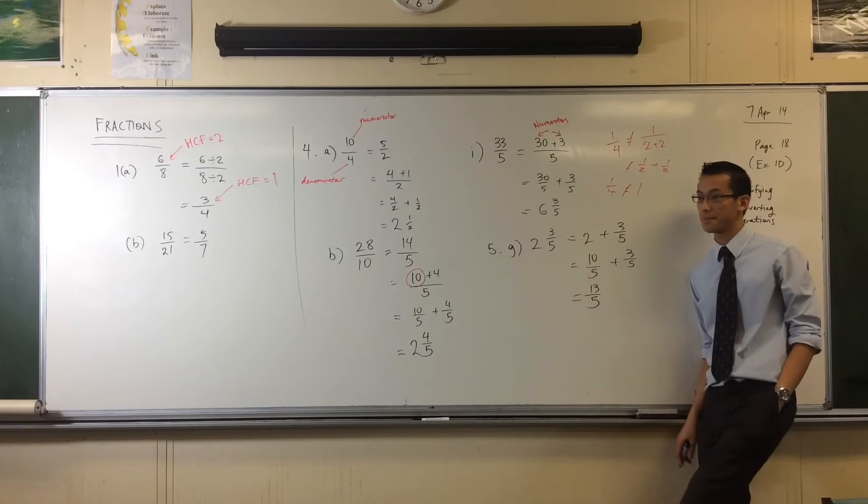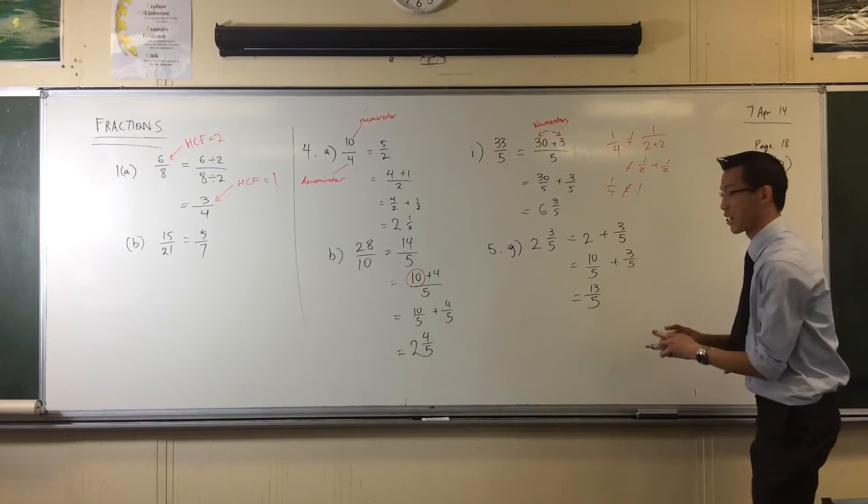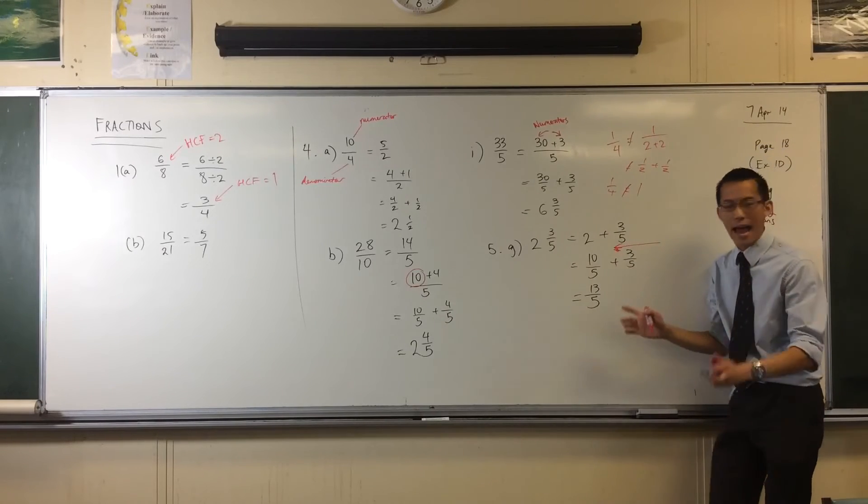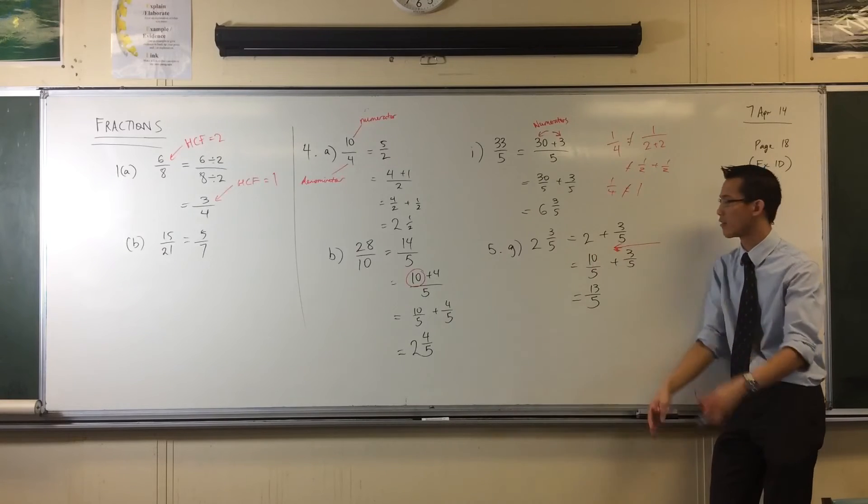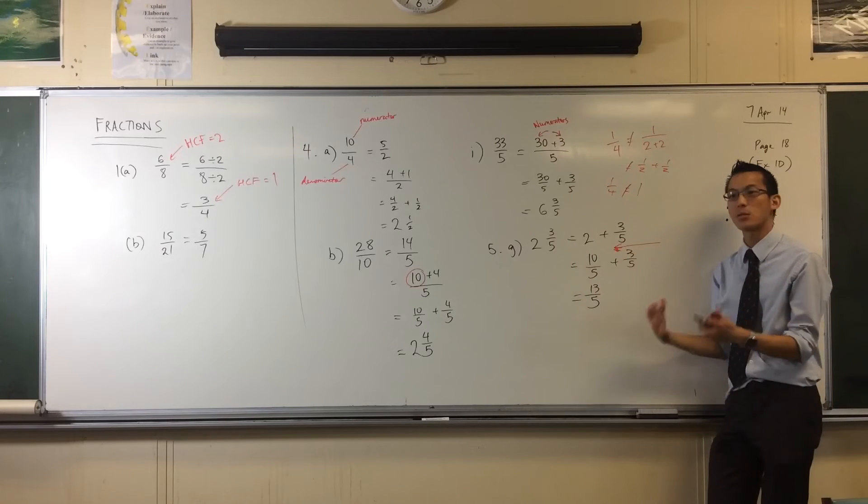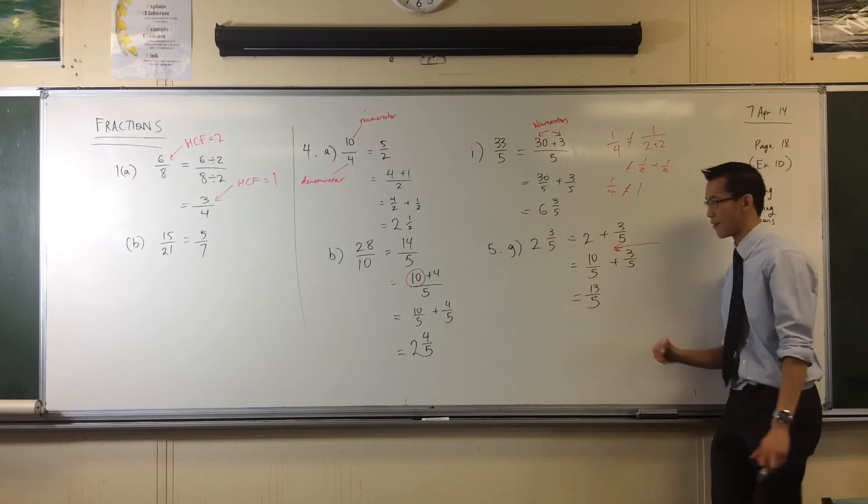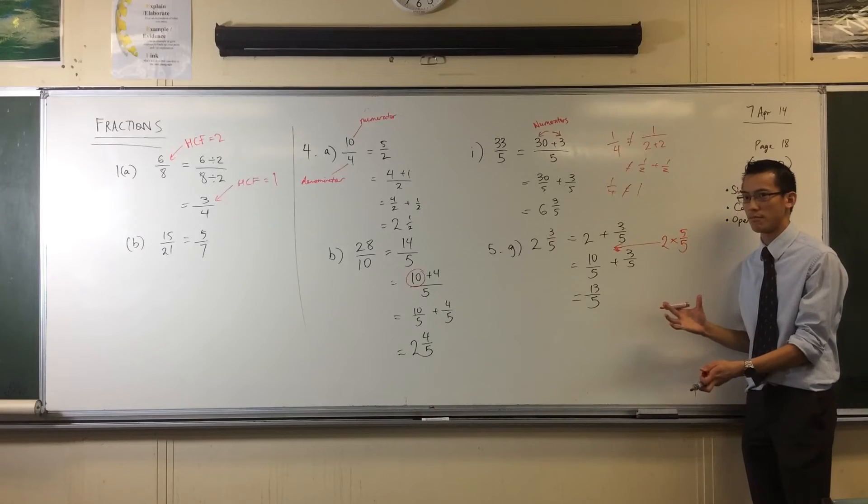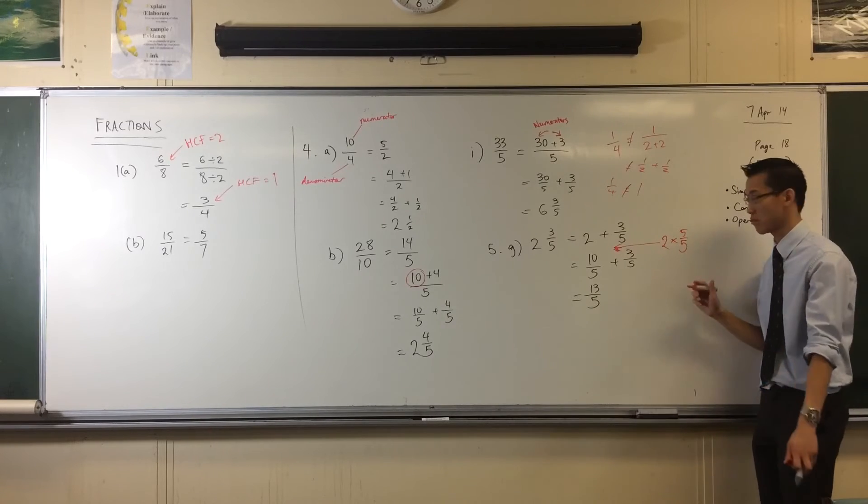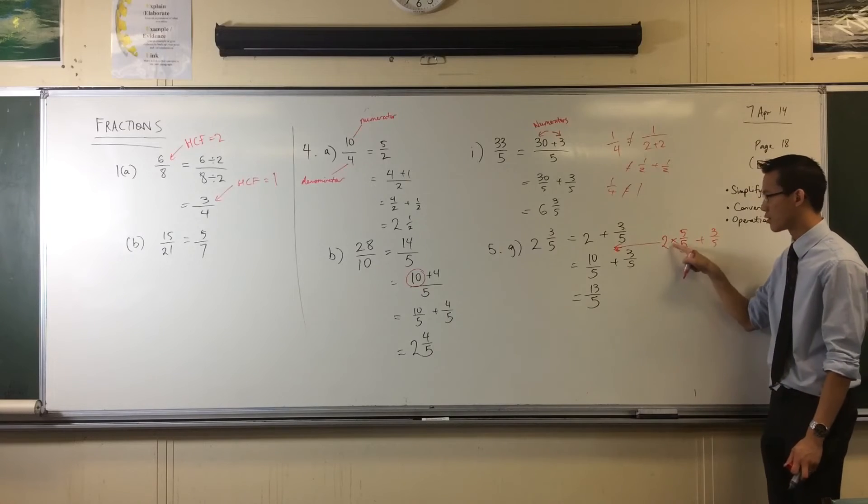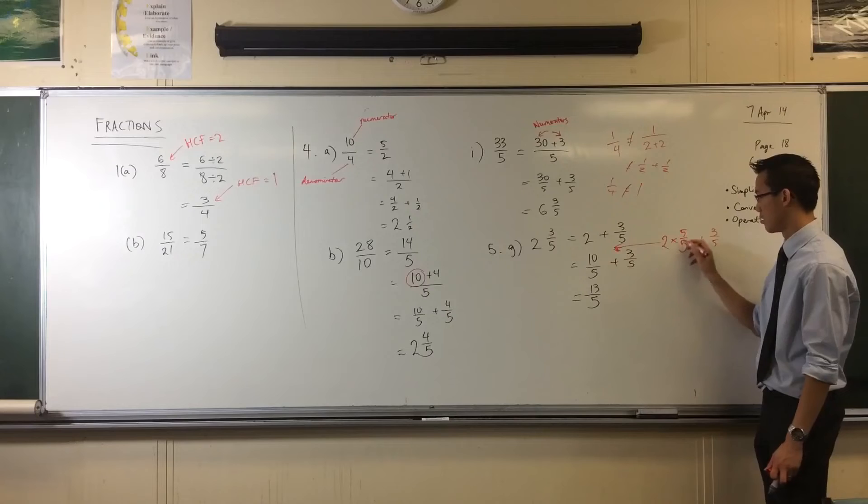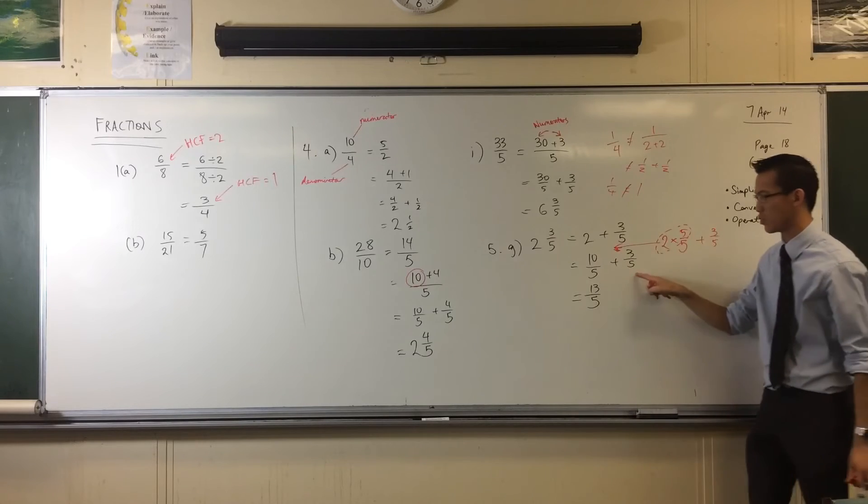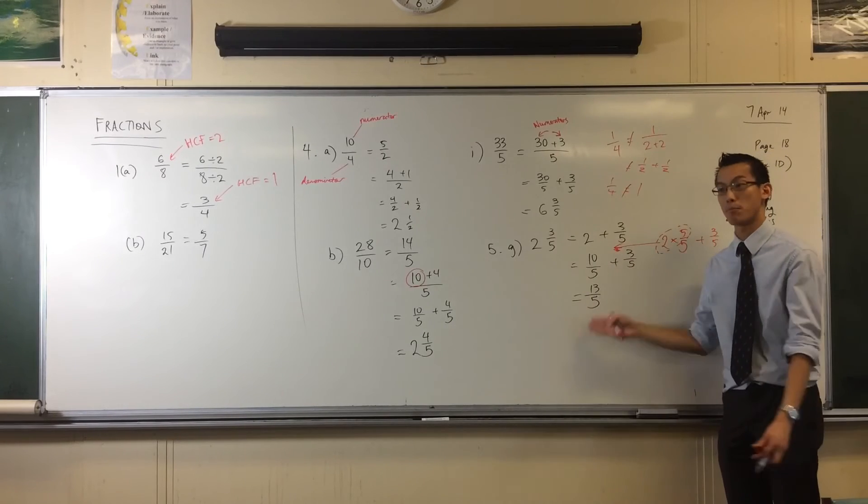Wait. So second line, where did the 10 come from again? Yeah, good question. Let me, maybe I should put an extra line in here. In here, the dilemma I had was I had 2 and I had 3 fifths. I need to mix them together somehow. So what I did was I put them, I made them talk the same language, which is the denominator of 5. So here's the way I did it. I multiplied it by 5 over 5. Which doesn't change the number. That's just 1. 2 times 1 doesn't change. So therefore, 2 times 5 is 10. See that? So that's where I got 10 over 5 from. And the reason I did that is so that these two guys would talk to each other and mix together and become an improper fraction.